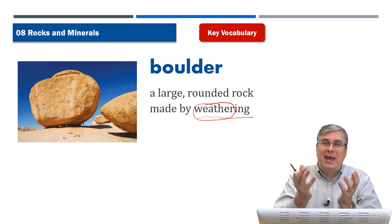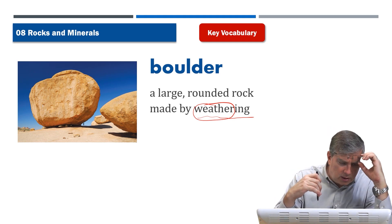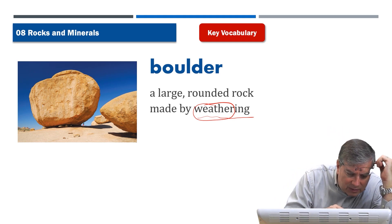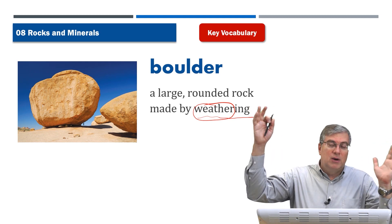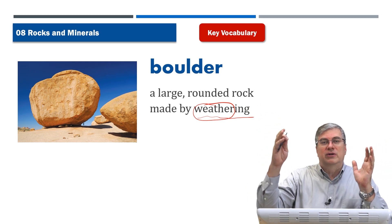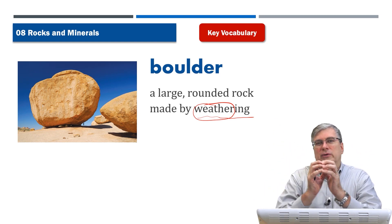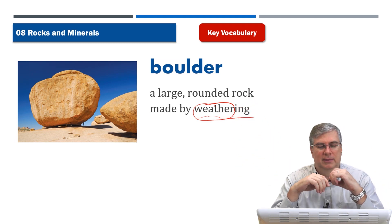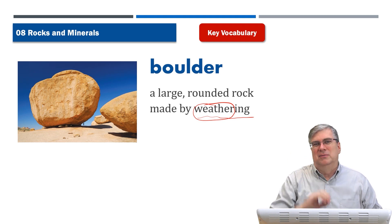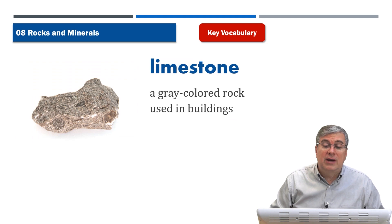Rocks will break up and become smooth because they wear away, and they're round — we call these large rocks boulders. That's a person standing next to it, so imagine how big that rock is. Boulders can be bigger than many houses put together, but they do have to be a certain size — a small rock is not a boulder.